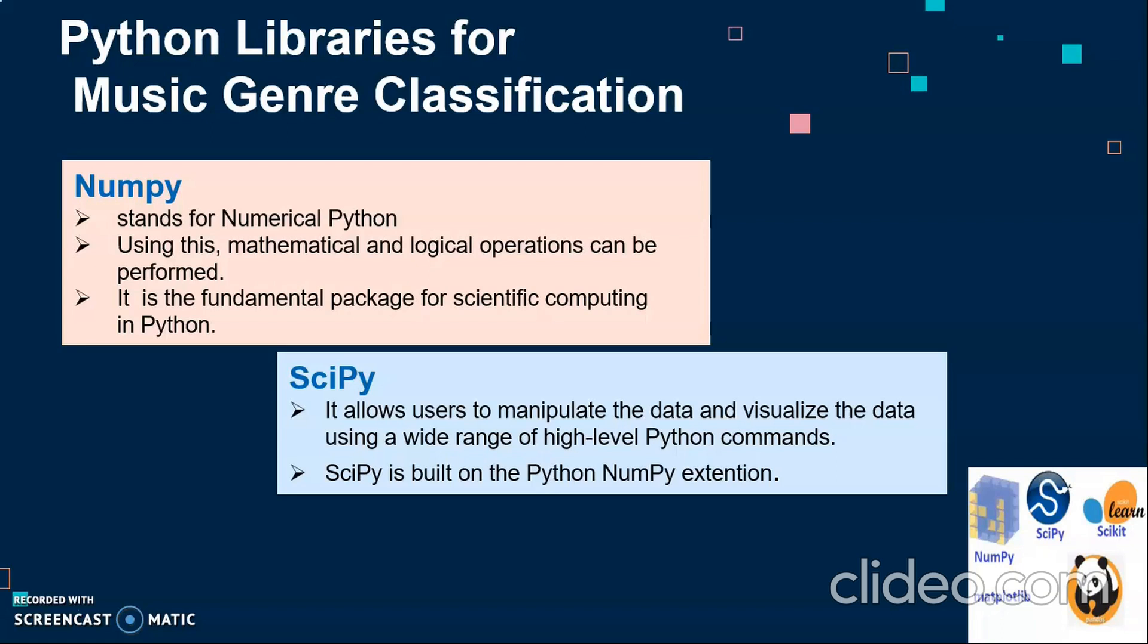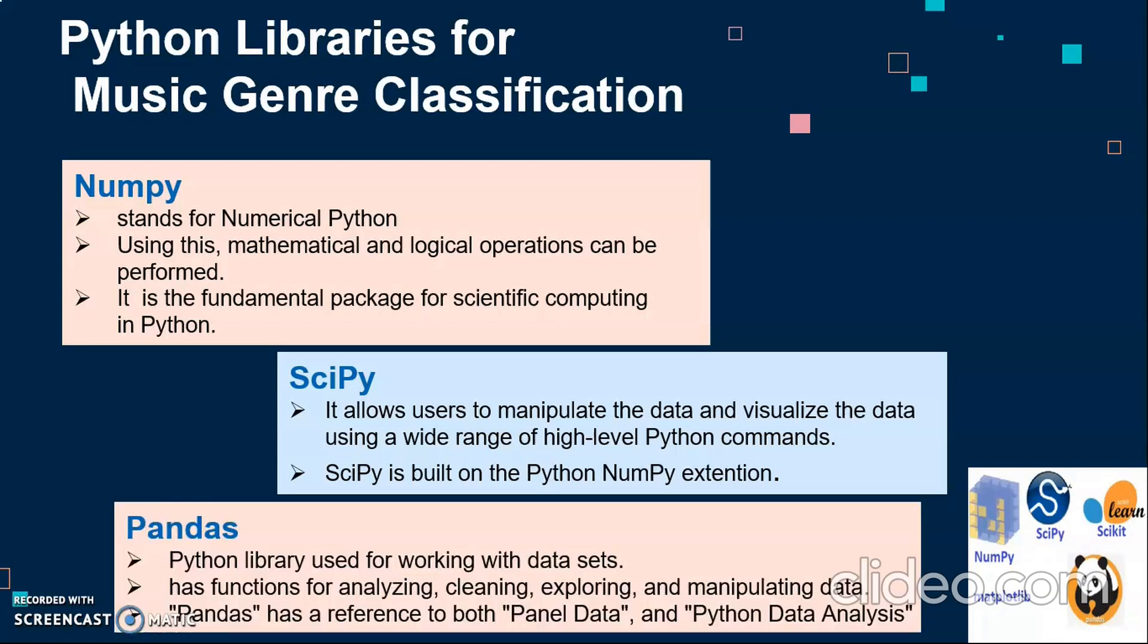As we will be using KNN algorithms, we have multiple operations to be performed. Hence NumPy is a useful library in that case. Moving forward to Pandas. Pandas is something which helps us for working with the data sets. Pandas has multiple functions for analyzing, cleaning, exploring and manipulating data. Pandas can also be referred as Python data analysis.